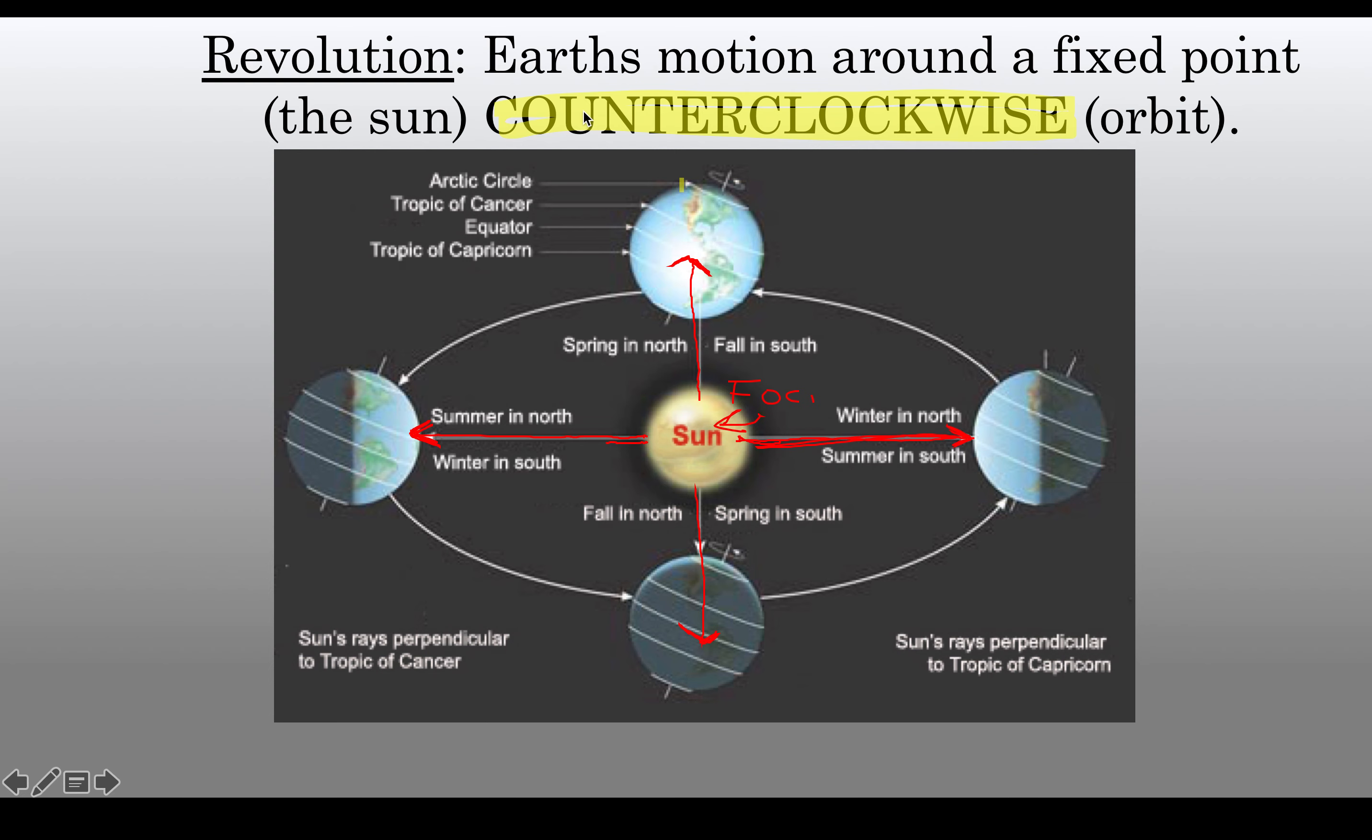So revolution is when we actually go around the sun. Revolution is how long it takes to go around the sun. It's the birthday, and the rotation is how long it takes for night and day, or one rotation on its axis. Now, one thing to notice as we are moving around the sun, as we revolve around the sun, if you notice the axis here, north and south pole, is always tilted in the same direction.